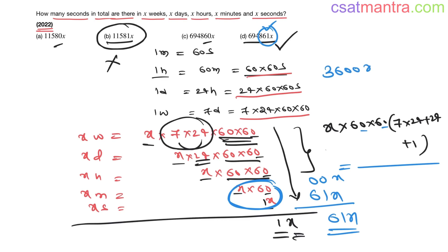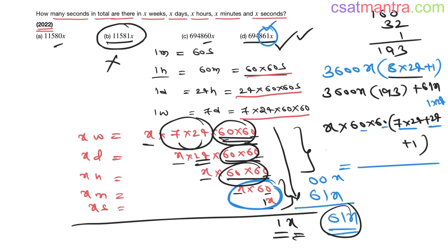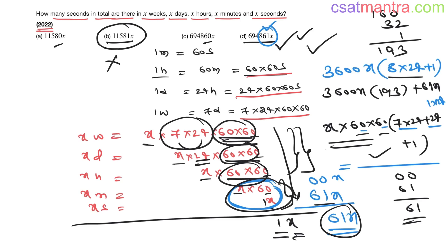This is 3600x into (7 into 24 plus 1 into 24 plus 1) = 3600x into (8 into 24 plus 1) = 3600x into 193. Then plus 61x. So the answer is 3600 into 193 x plus 61x. Answer is D. Don't do the full multiplication and summation — just apply the number system methods: last digit and last two digits.